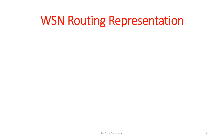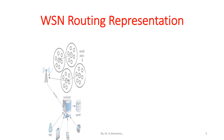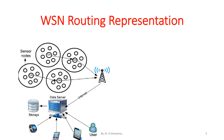Wireless sensor network routing representation is shown here. The information is present in the sensor nodes. The sensor nodes send the information to the cluster head in the particular cluster. The cluster heads, in turn, collect the information to the base station. From the base station, through the internet, the data collected by the sensor nodes is distributed to the data server. From the data server, the information may go to storage or it may go to the end user. The end user may be of a variety of types.